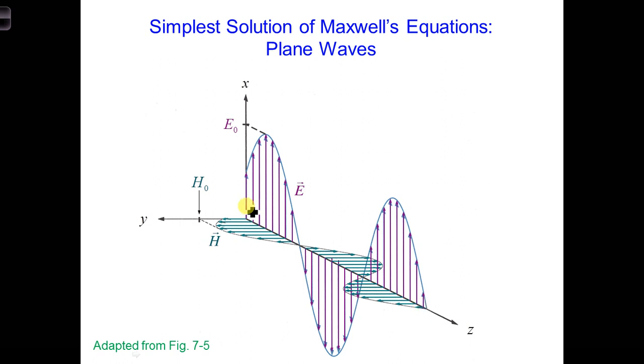The electric field is oriented in the X direction, so we say it's X polarized. We usually use the direction of the E field to describe what the polarization is of the wave. And in this case, the magnetic field is oriented in the Y direction. So both of those are perpendicular to the direction of propagation.